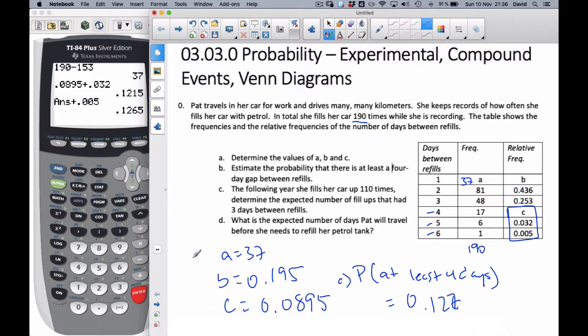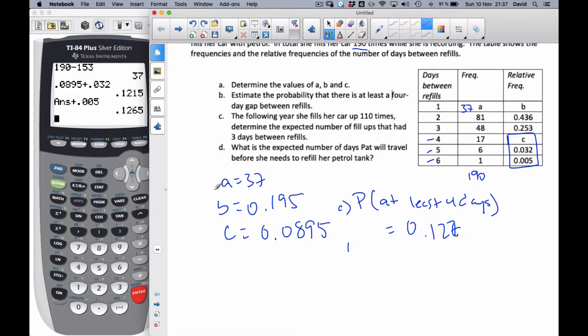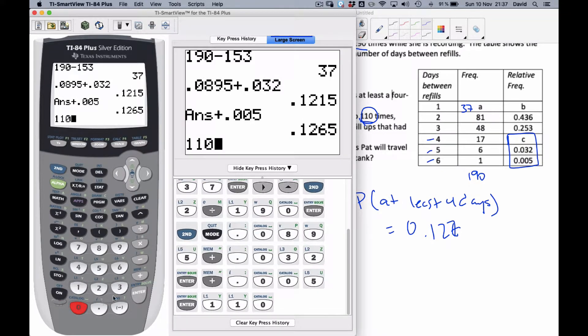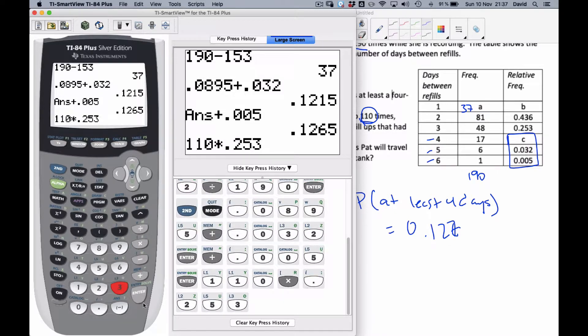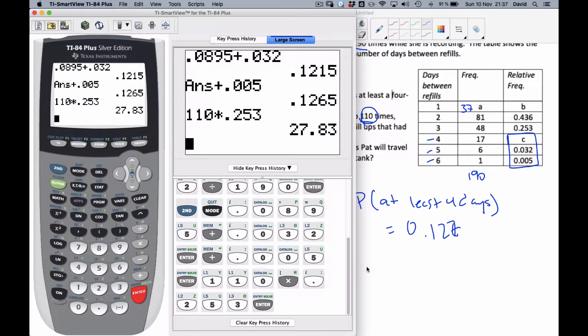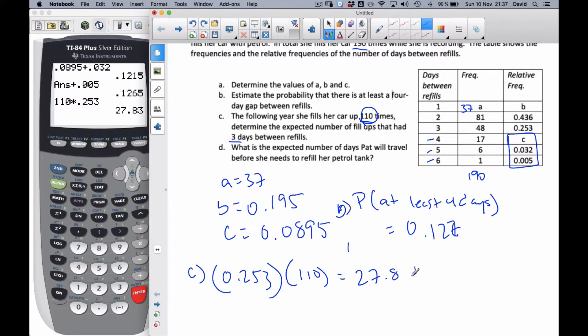Continuing along here. So now, this was B part. C says, the following year she fills her car 110 times. Determine the expected number of fill-ups that had a three-day refill. Well, the probability of three-day refill is 0.253. And I know I'm going to do it 110 times, so I'm just going to multiply those two together. If I do 110 times 0.253, this is the expected number. I'm going to expect to fill-up 27.8 times for this particular year I have three-day fill-ups.